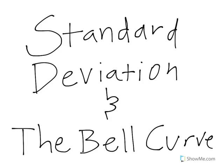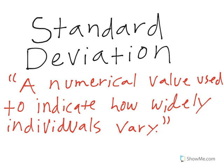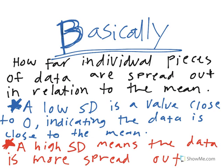Hey everybody, today I'm going to be talking to you about standard deviation and the bell curve. Standard deviation is defined as a numerical value used to indicate how widely individuals vary. Basically, how far individual pieces of data are spread out in relation to the mean. A low standard deviation is a value close to zero, indicating the data is close to the mean.